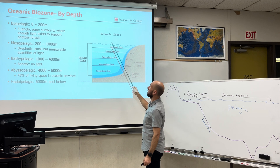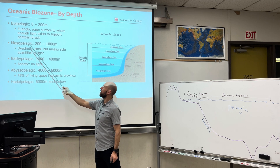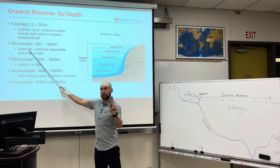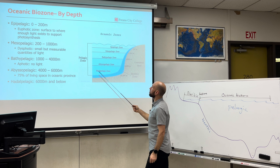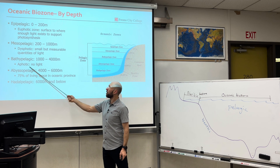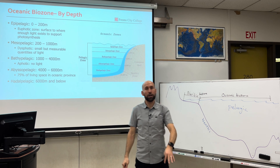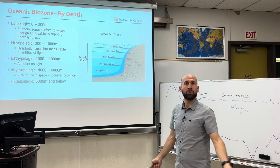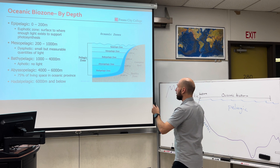Below the epipelagic, we have the mesopelagic, which goes from 200 to 1,000 meters. This is called the dysphotic zone — very little light occurs here and it decreases as you go down. Below 1,000 meters we get the bathypelagic zone, also known as aphotic — no light here. After about a kilometer underneath the surface of the water column, there's no more light; it's all absorbed by the water.